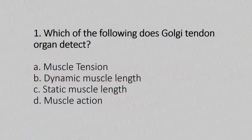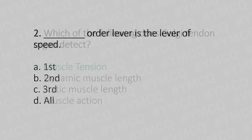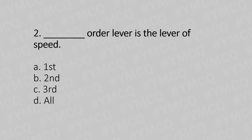First question: Which of the following does the Golgi tendon organ detect? Option A: muscle tension. Option B: dynamic muscle length. Option C: static muscle length. Option D: muscle action. The answer is Option A, muscle tension.